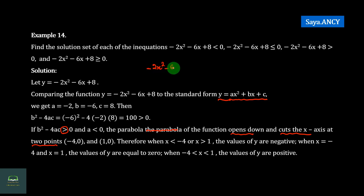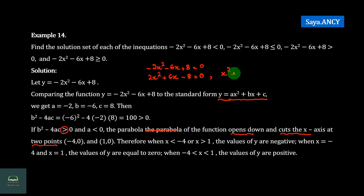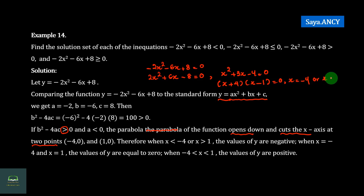2a squared minus 8 plus 8 equals 0, then 2a squared plus 8 minus 8 equals 0. The next step is a squared plus 3h minus 4 equals 0. Then the next step is a plus 4 into a minus 1 equals 0. Then a equals minus 4 or a equals 1.